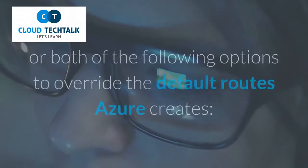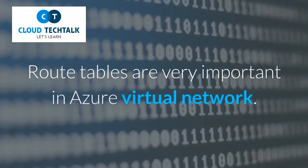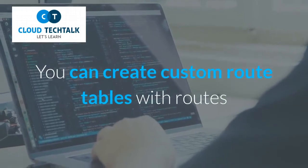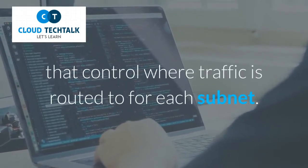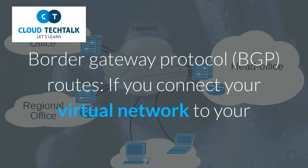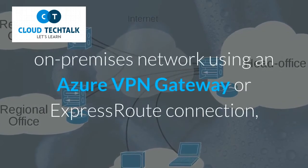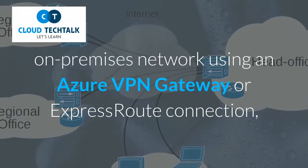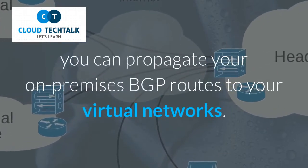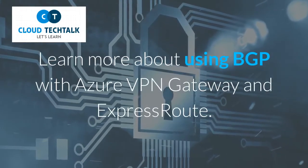You can implement either or both of the following options to override the default routes Azure creates. Route tables are very important in Azure Virtual Network — you can create custom route tables with routes that control where traffic is routed to for each subnet. Learn more about route tables. Border Gateway Protocol routes: if you connect your virtual network to your on-premises network using an Azure VPN gateway or ExpressRoute connection, you can propagate your on-premises BGP routes to your virtual networks. Learn more about using BGP with Azure VPN gateway and ExpressRoute.